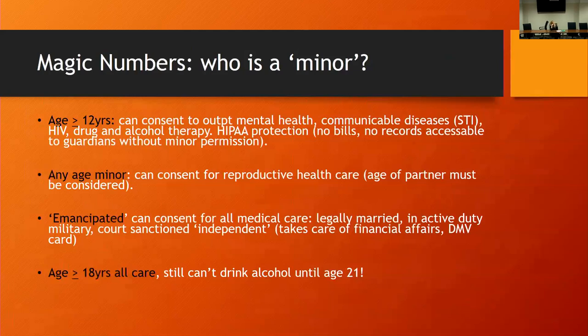Any age minor can consent for reproductive health — 'I would like birth control.' However, we're going to talk about that: you have to ask how old the partner is. If they want reproductive care and the partner is 15, that's a problem. They can consent for themselves, but we need to evaluate the partner's age for mandatory reporting purposes.